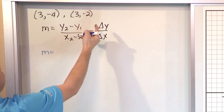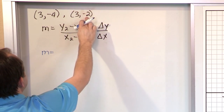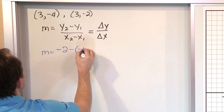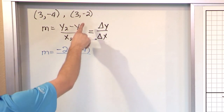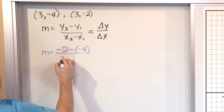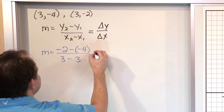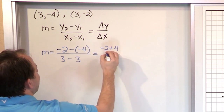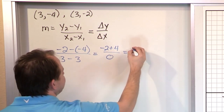The slope equals the change in y. I can go any way I want as long as I'm consistent. So I'll do negative 2 minus negative 4 — always wrap it in parentheses so you don't make a simple mistake. And since I went this way on top, I have to go the same way on the bottom: 3 minus 3. You can already see there's going to be a problem, because you get negative 2 plus 4 over 0, giving you 2 over 0.